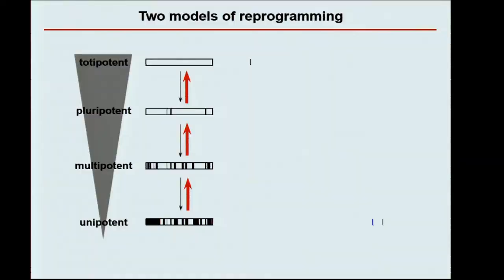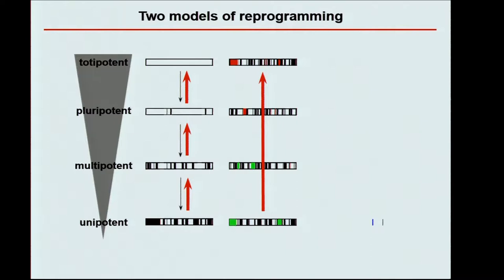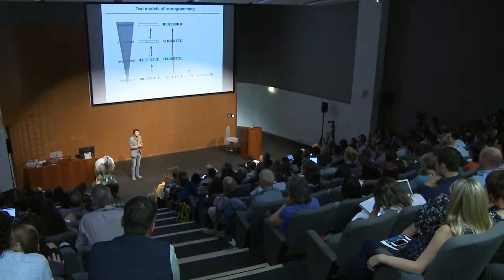However, another possibility could be true: that pluripotency is not an empty epigenetic state, but a highly specific and unique epigenetic state that needs to be actively induced. Perhaps that is what the famous Yamanaka factors are doing — establishing the embryonic stem cell-typical chromatin state. If that latter model is true, it should actually be possible to take different factors and push cells into another unique epigenetic state, and that's exactly what we wanted to test.